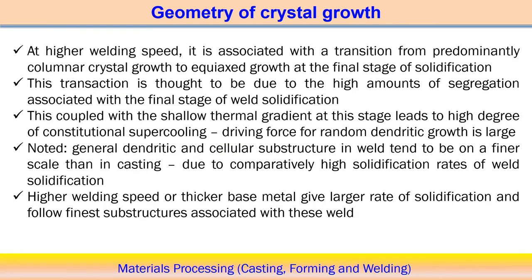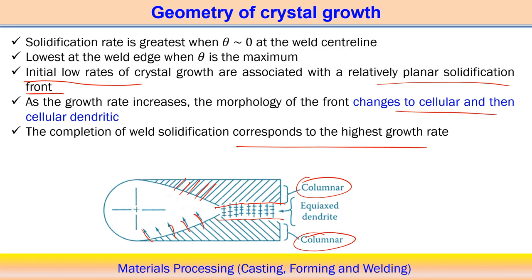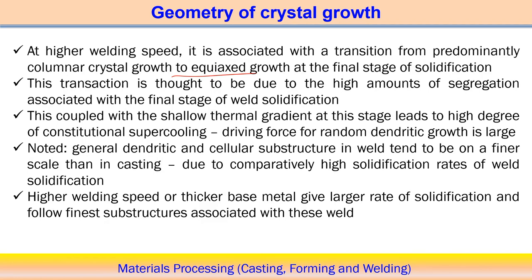At high welding speed, there is a transition from columnar growth to equiaxed growth. The growth rate at the boundary is R = 0, and at the center the growth rate is maximum, R = V. At the center point, the growth rate is very high. That is why at the part where the growth rate is maximum, we can try to follow equiaxed growth, which usually occurs at the final stage of solidification. When solidification starts gradually at the interface, the solidification also starts first at the interface, where heat is extracted from the molten pool.